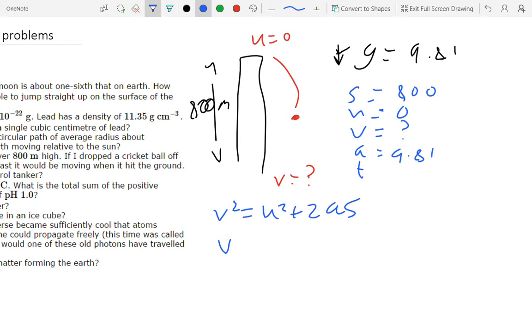So u is zero, so we've just got v squared equals 2as, which means v equals the square root of 2 times 9.81 times 800.